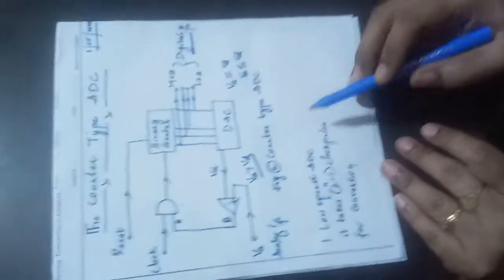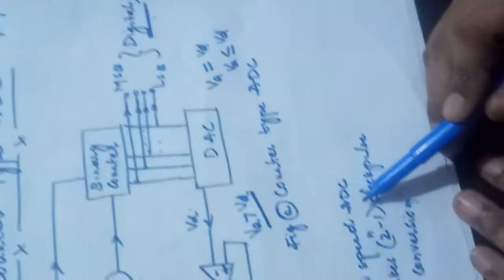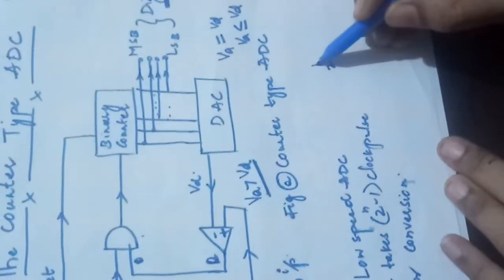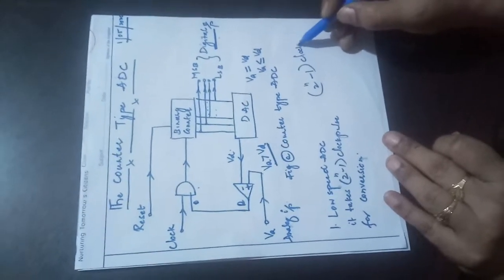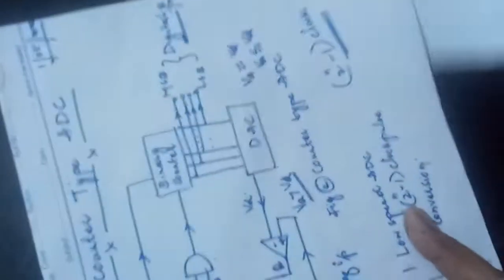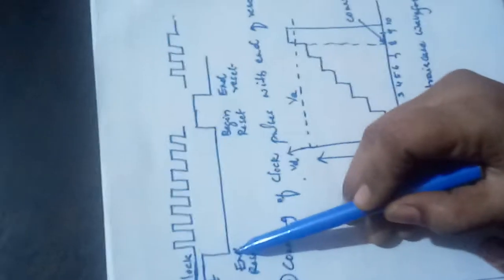The disadvantage of this ADC is that it is a very low speed ADC. It takes 2^N minus one clock pulses for the conversion of an analog signal into a digital one. This is a very high conversion time, so it is a very slow, low speed ADC.